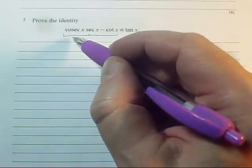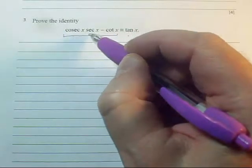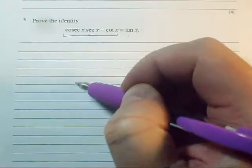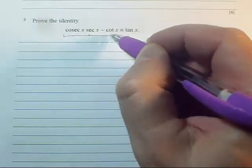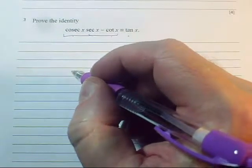But it may well be a good idea to express these things here in terms of maybe everything in the identity. But start off by expressing these things here in terms of sine x and cos x.